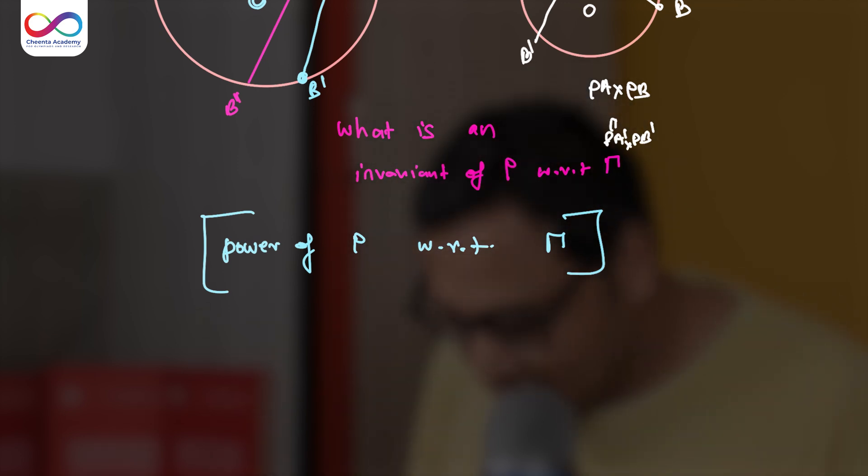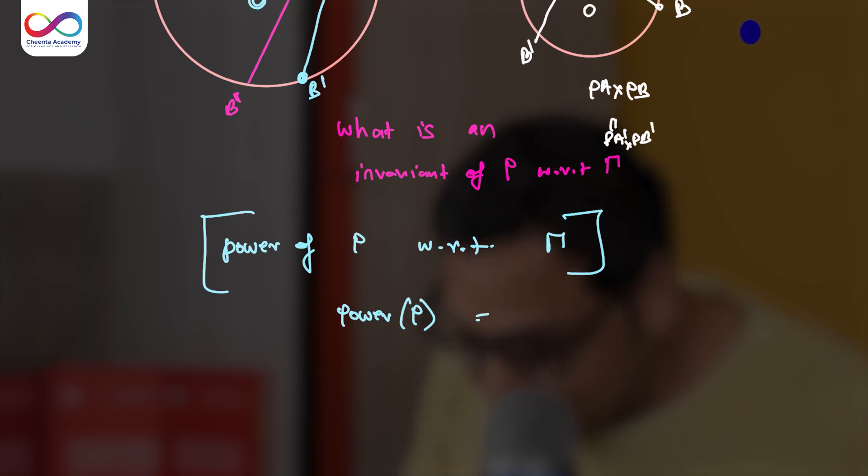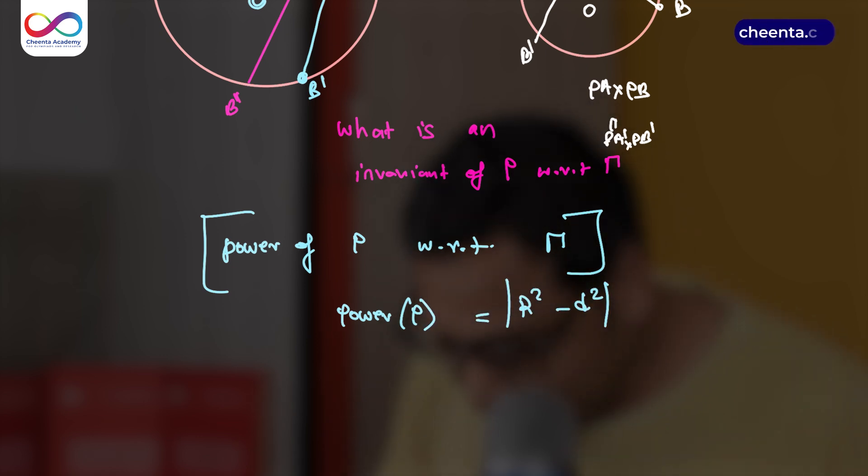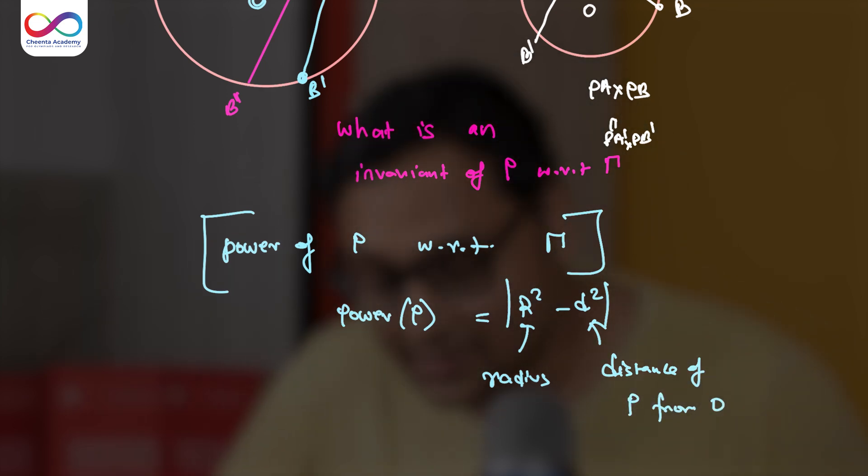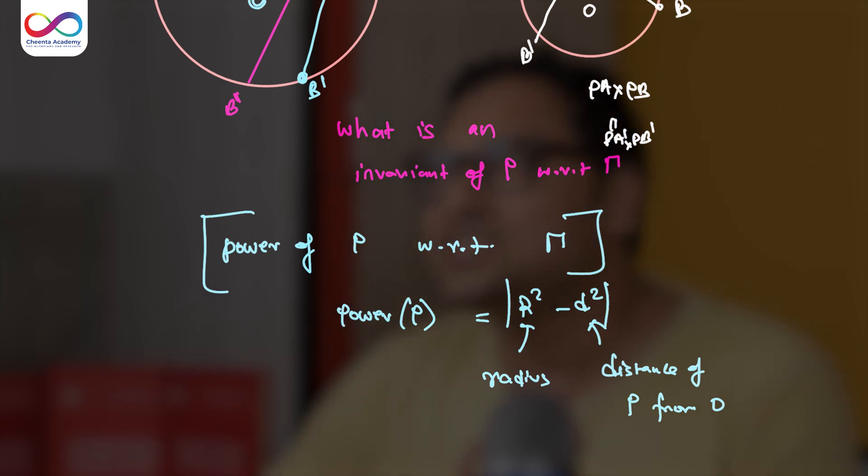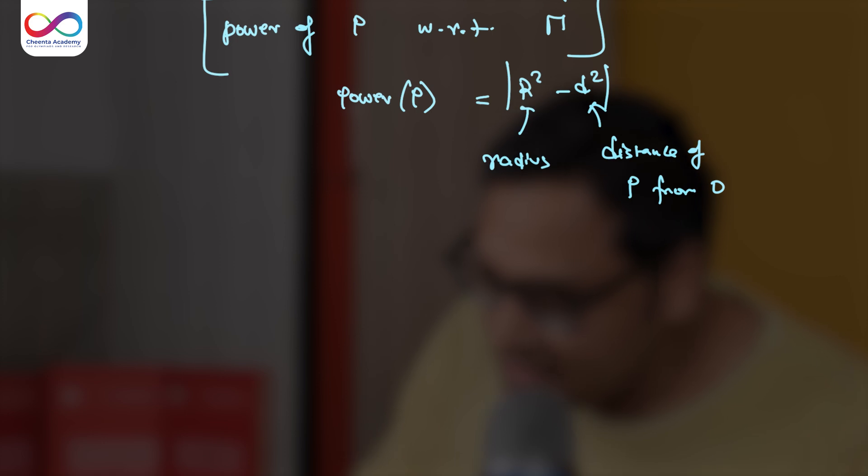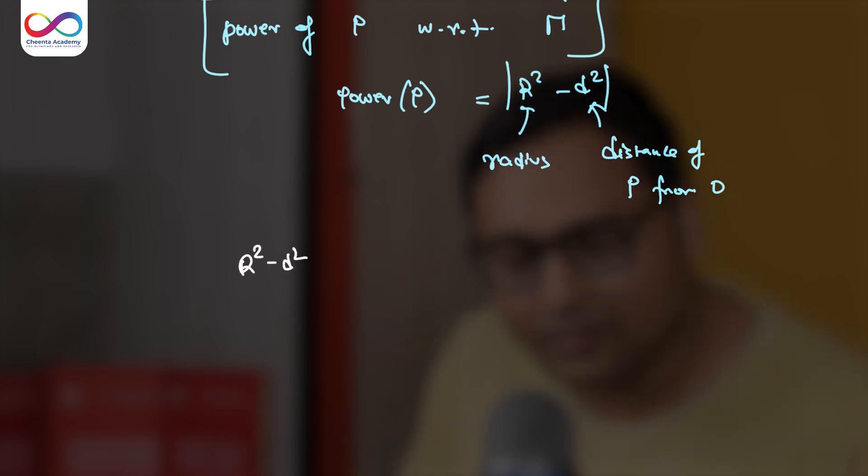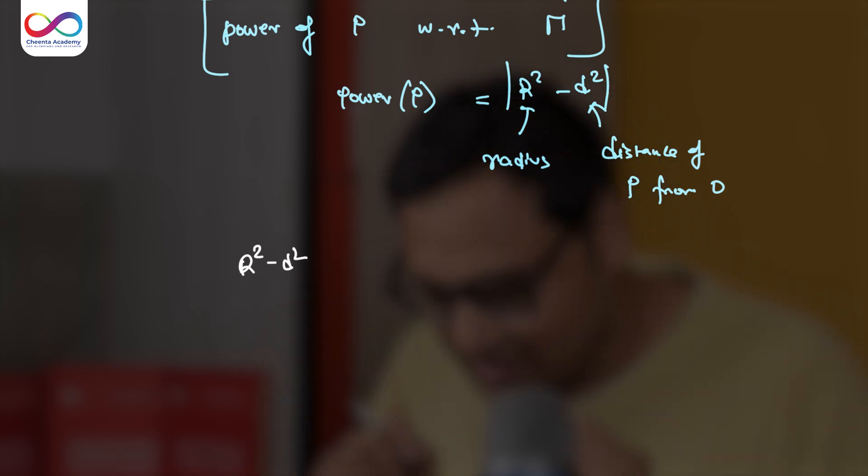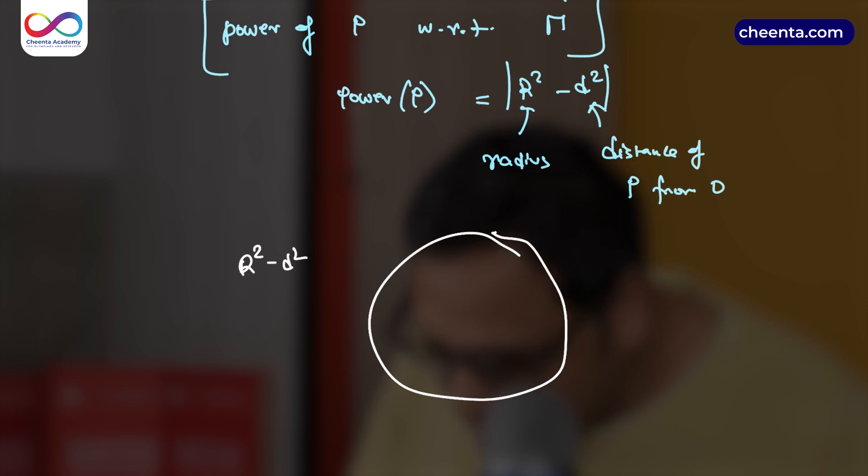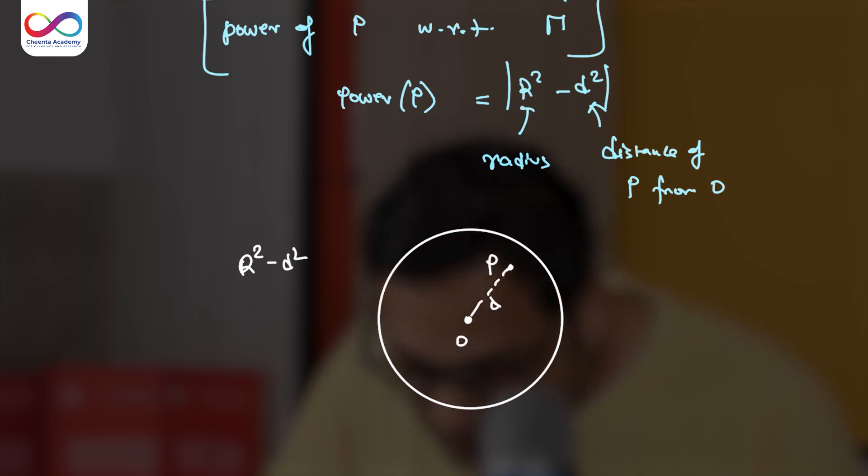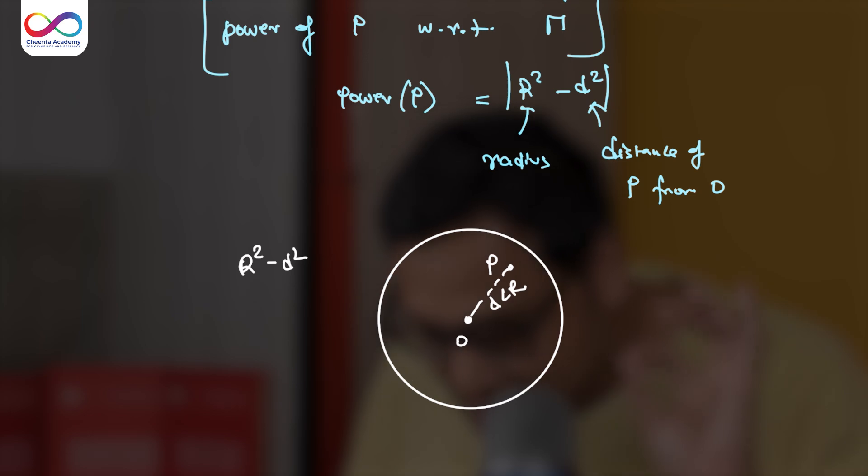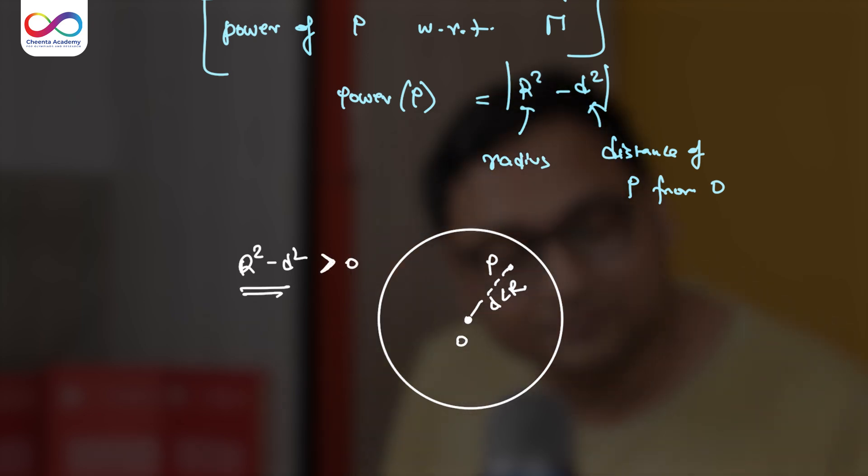There is another way to write it. The power of P is also R² minus D². Here R is the radius of the circle and D is the distance of P from the center O. So R² minus D². Now you can imagine something very interesting happening. Let's suppose if you say it's R² minus D², lift the absolute value sign, just look at R² minus D². As long as P is inside the circle, the distance D will be smaller than R, smaller than the radius. So R² minus D² will be positive, would be greater than 0.